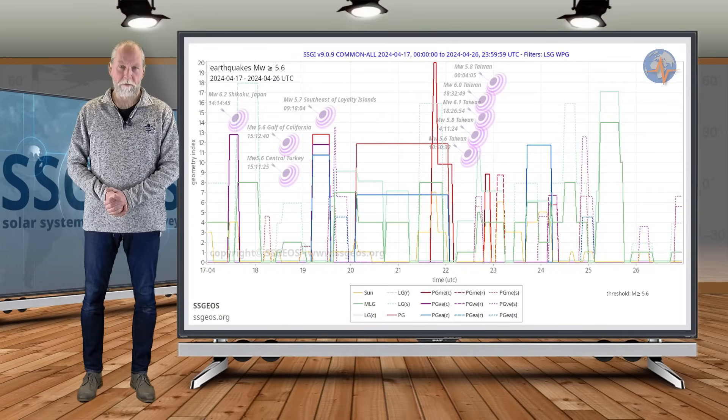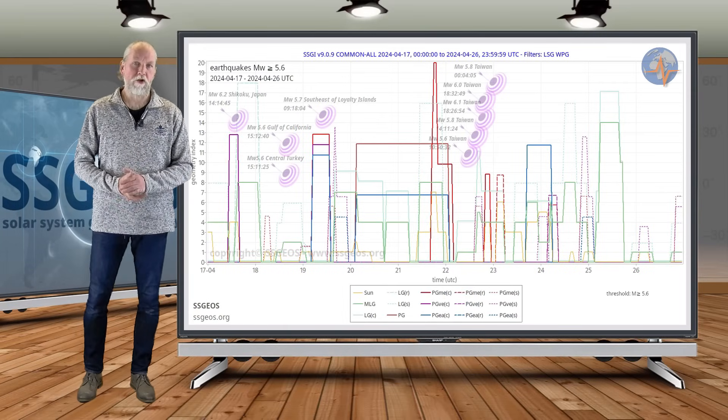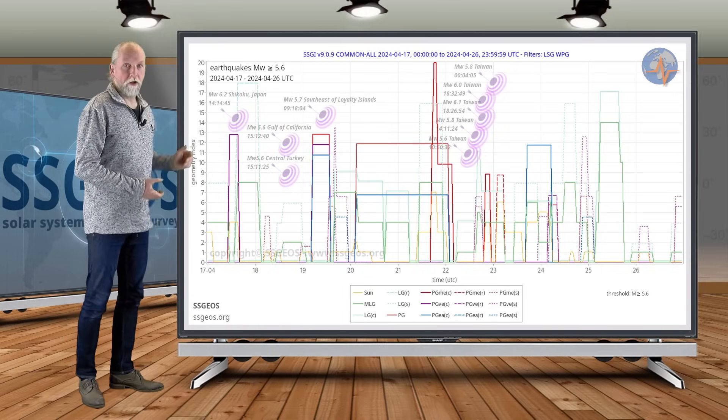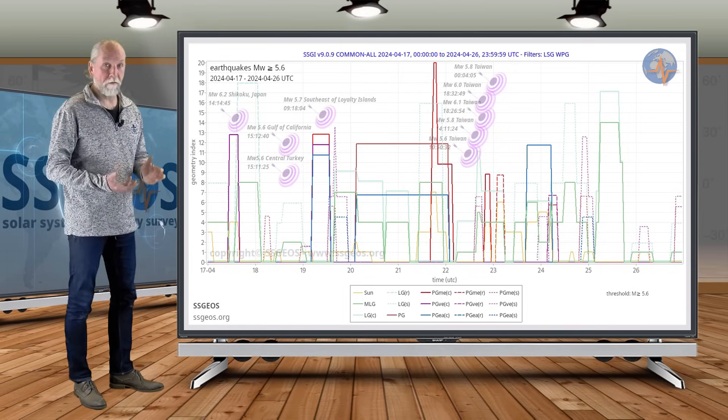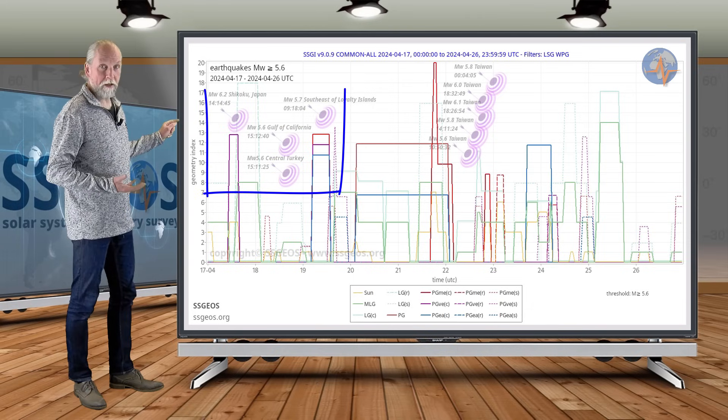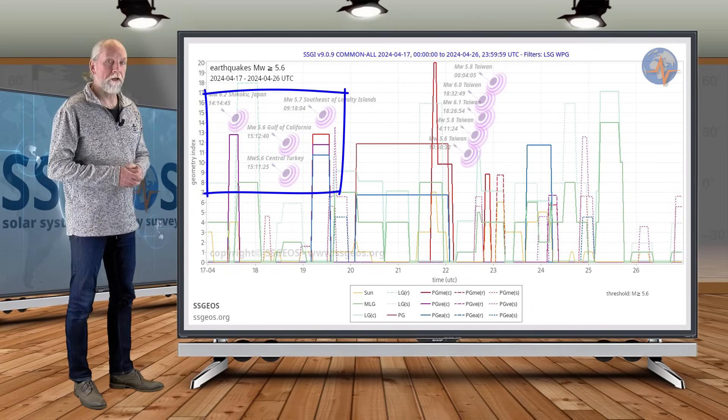Welcome to a new planetary and seismic update. We look at the SGI graph that I discussed in the previous update, now with the seismic activity that actually occurred magnitude 5.6 and larger. We see a cluster at the beginning with the planetary geometry involving Venus.